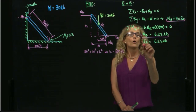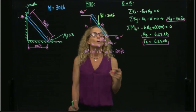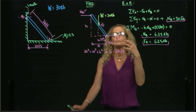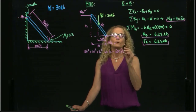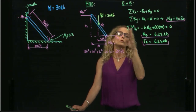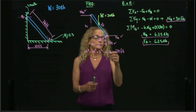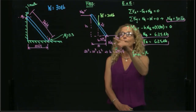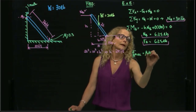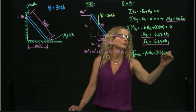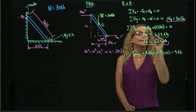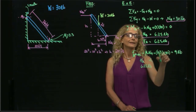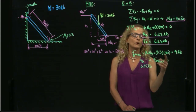Now that we have all the reactive forces — NA, NB, and FA — we need to analyze whether the bar is able to move. I have to compare this friction force with the maximum friction force you can reach before impending motion. I calculate the maximum possible friction force at A: that will be μ times NA, which is 0.3 times 30, giving 9 pounds. Therefore, the friction force of 6.25 pounds is less than the maximum possible force of 9 pounds before losing equilibrium.